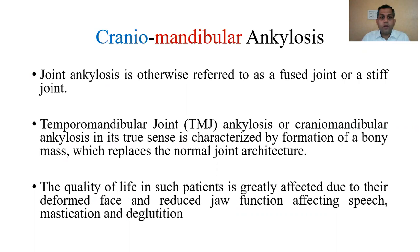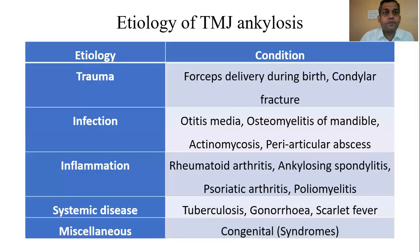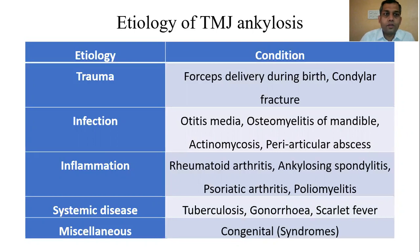The quality of life in such patients is greatly affected due to their deformed face and reduced jaw function, affecting mastication and deglutition. When it comes to etiology of Temporomandibular Joint Ankylosis, it may be categorized into trauma, infection, inflammation, systemic diseases, and other miscellaneous factors.